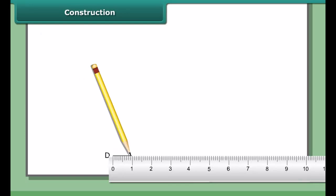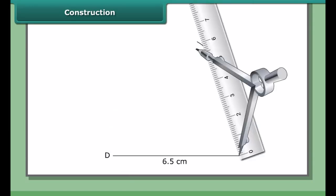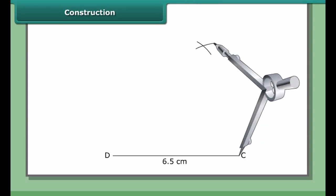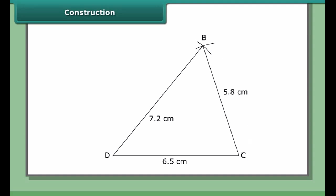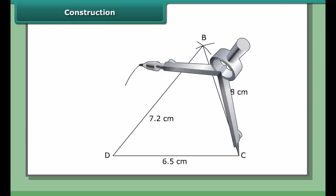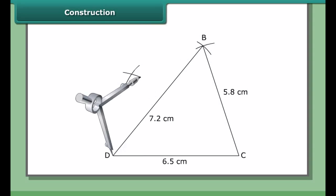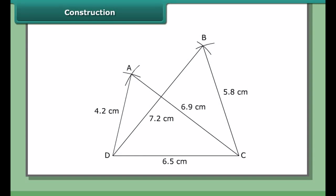Constructing BCD: Draw DC as 6.5 cm. With D as center and radius 7.2 cm, draw an arc. With C as center and radius 5.8 cm, draw an arc to cut the previous arc at B. Join CB and DB. Constructing ACD: With C as center and radius 6.9 cm, draw an arc on the same side of DC. With D as center and radius 4.2 cm, draw another arc to cut the previous arc at A. Join CA and DA. Join AB. Then ABCD is the required quadrilateral with diagonals AC and BD.